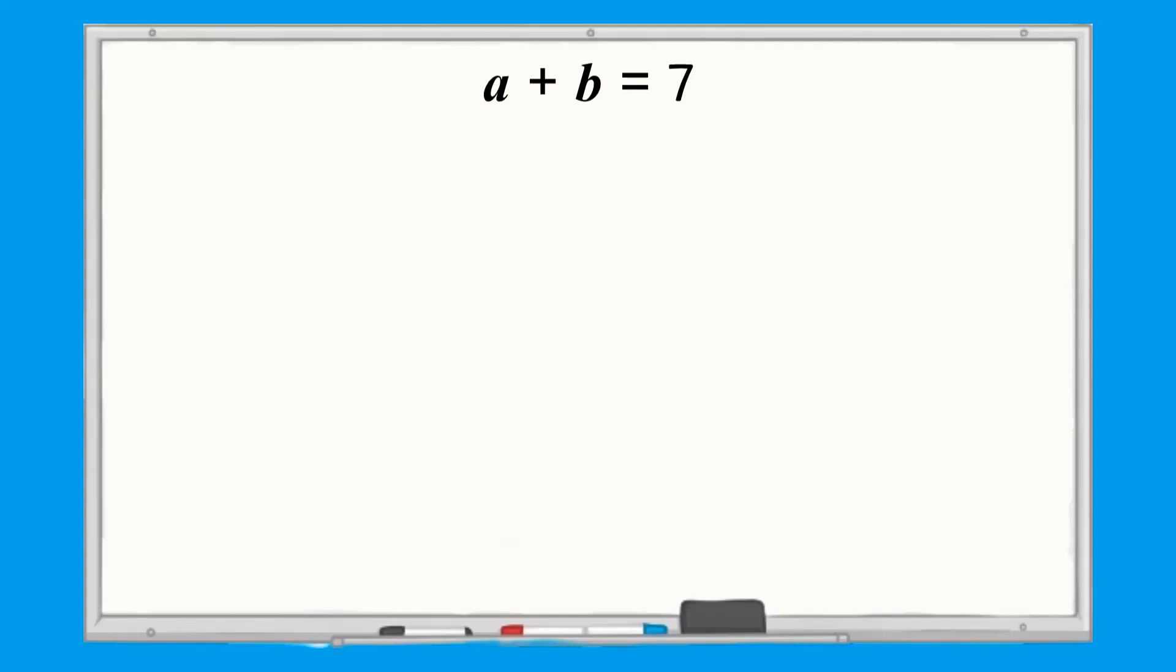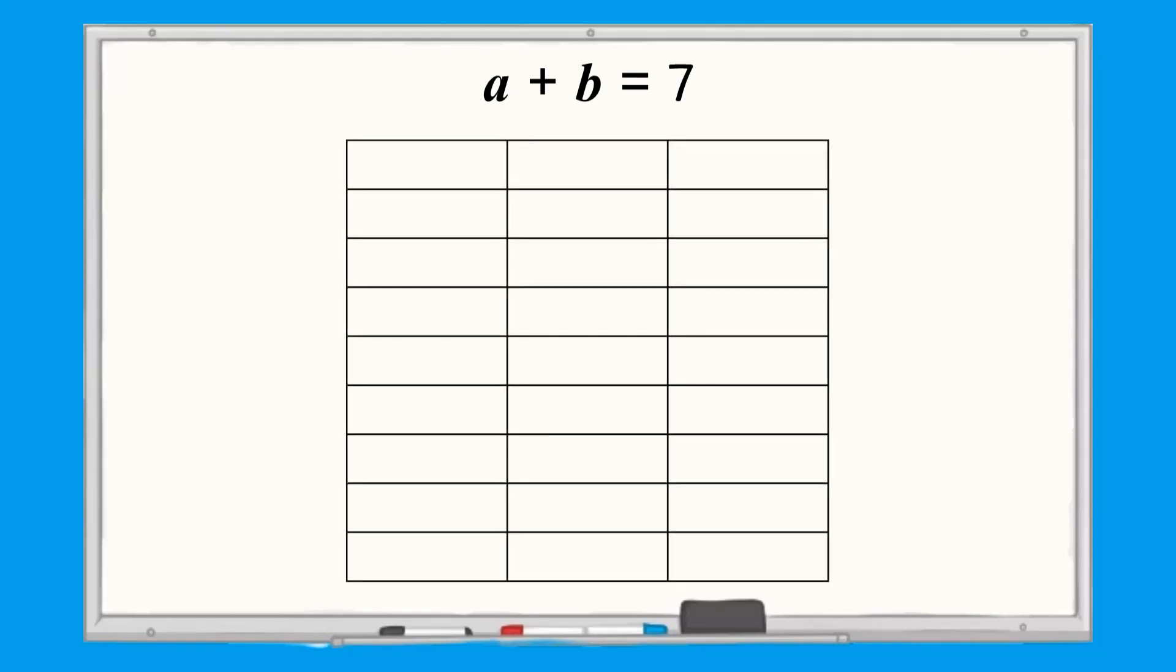In this equation, we cannot know the exact values of a and b because we don't have enough information, but we can make a list of possibilities. A table is a good way to organize this information in a systematic way.